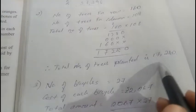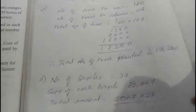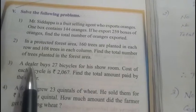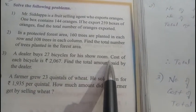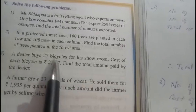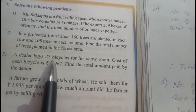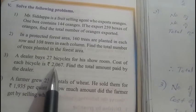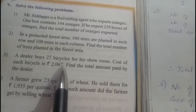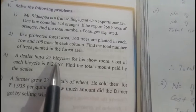Similar to that, we have the third question. A dealer buys 27 bicycles for his showroom. He bought 27 bicycles for selling them. Cost of each bicycle is ₹2,067, so for one bicycle.